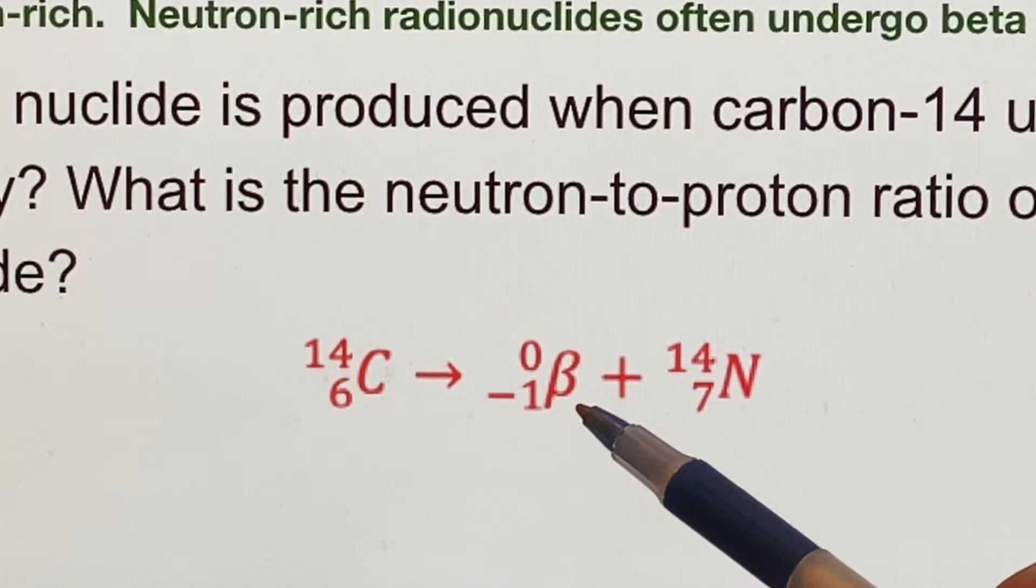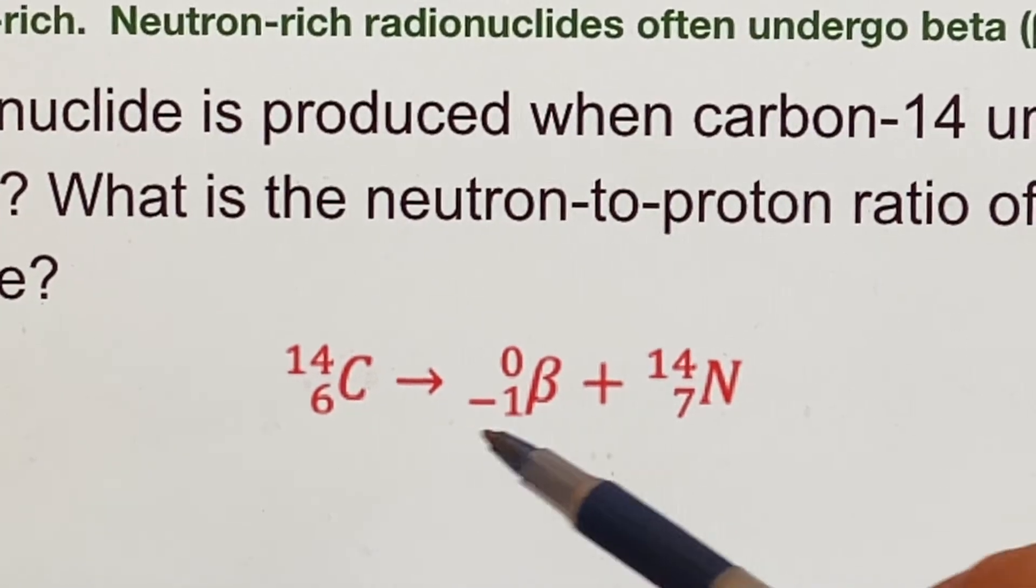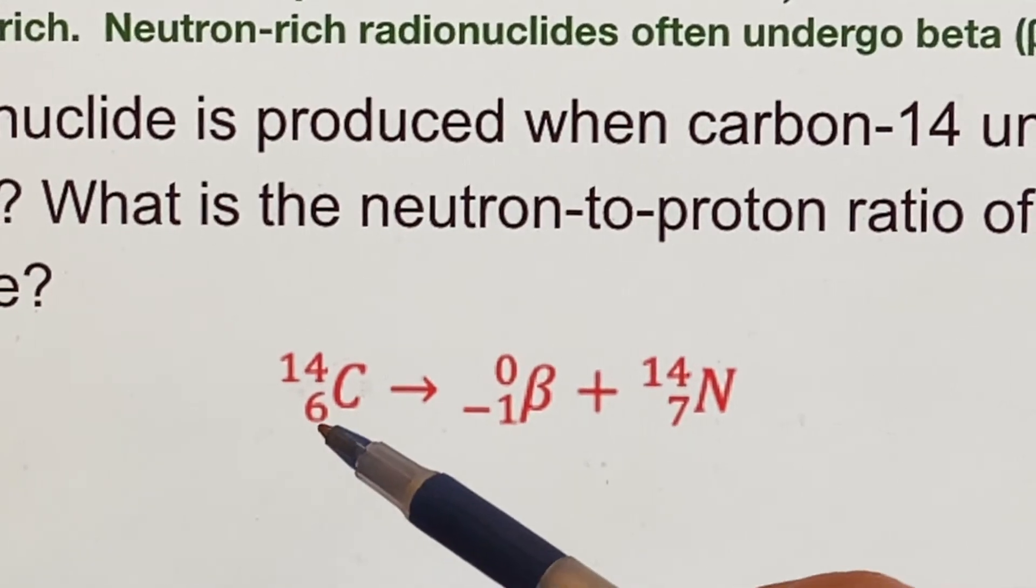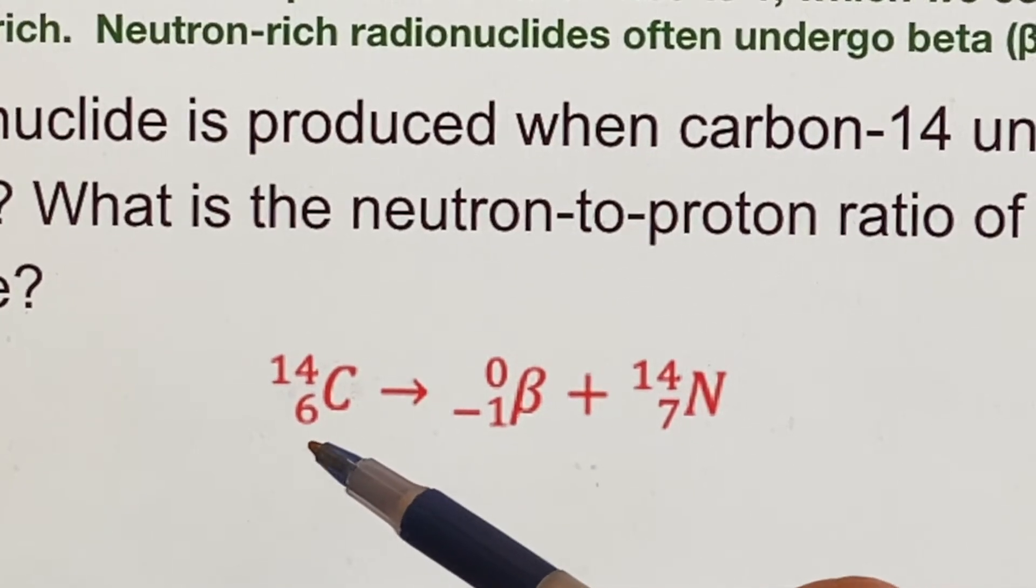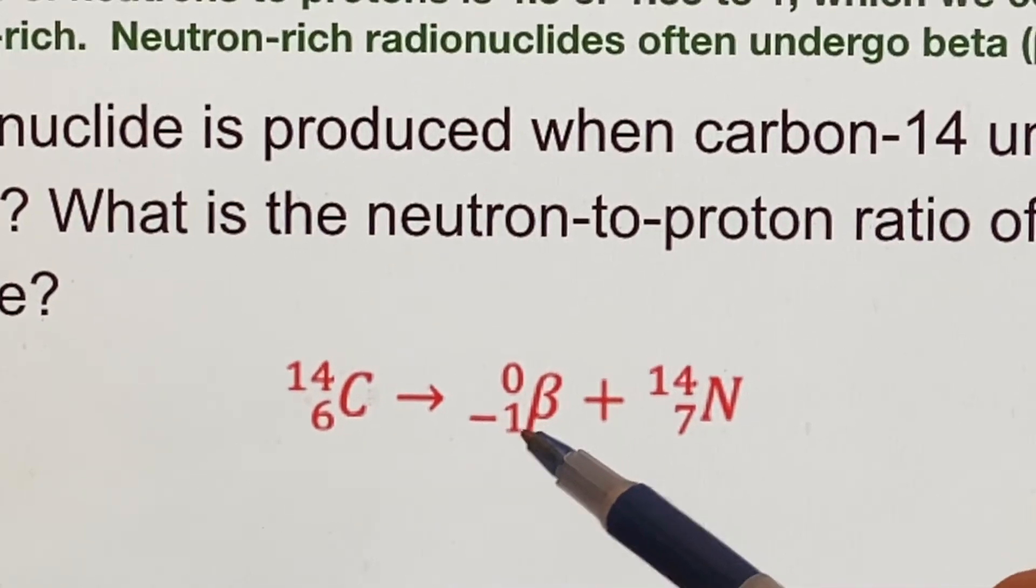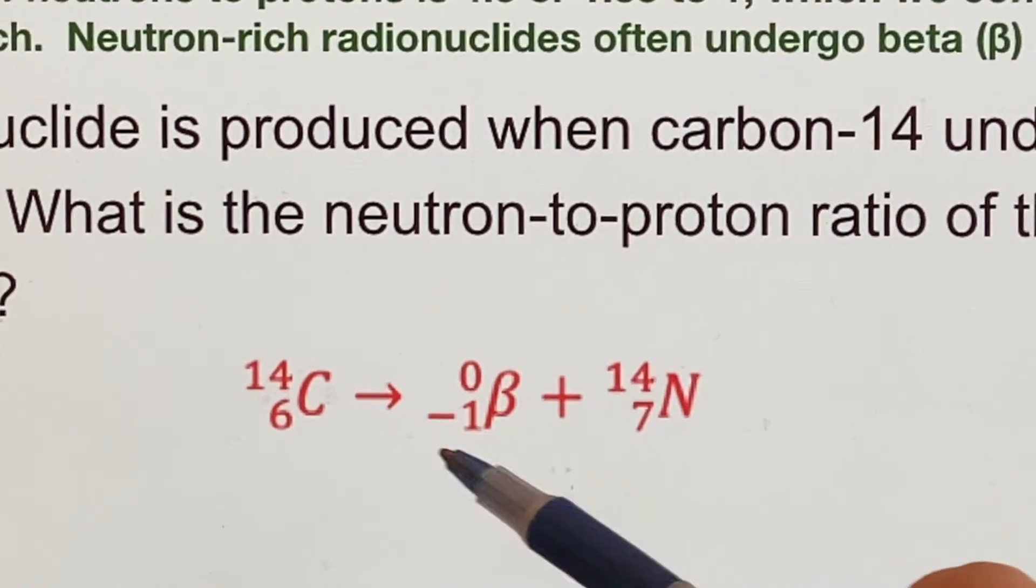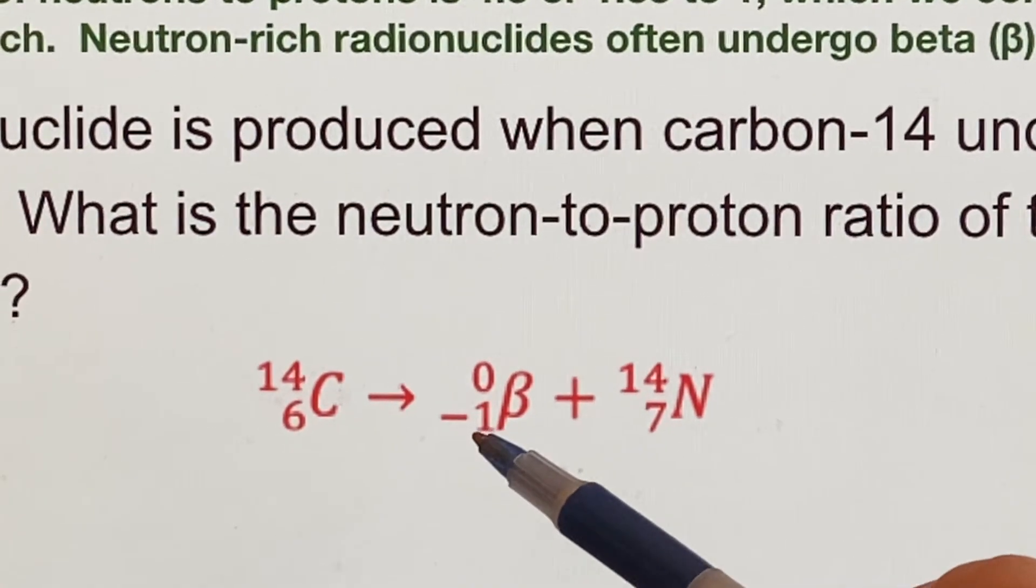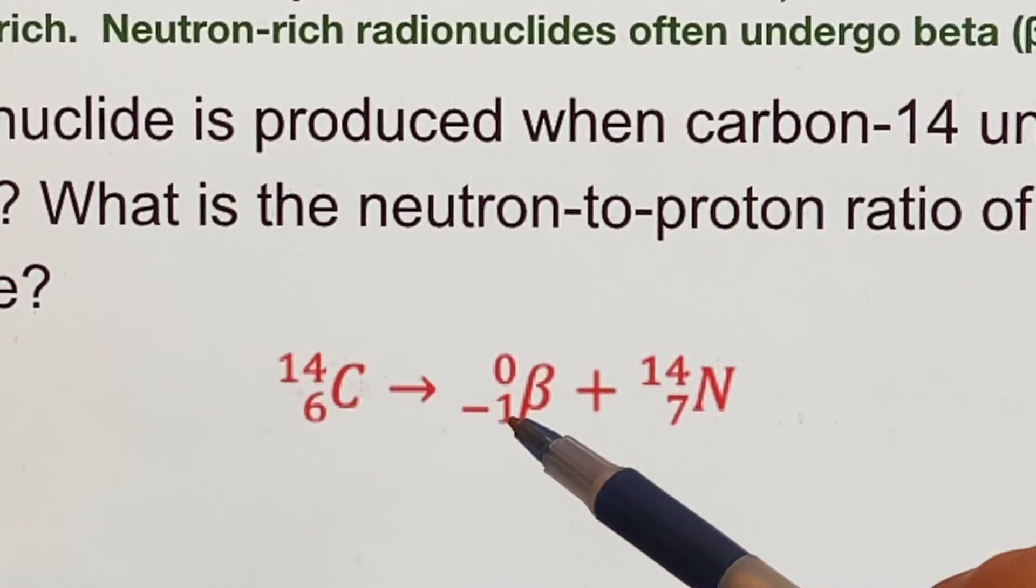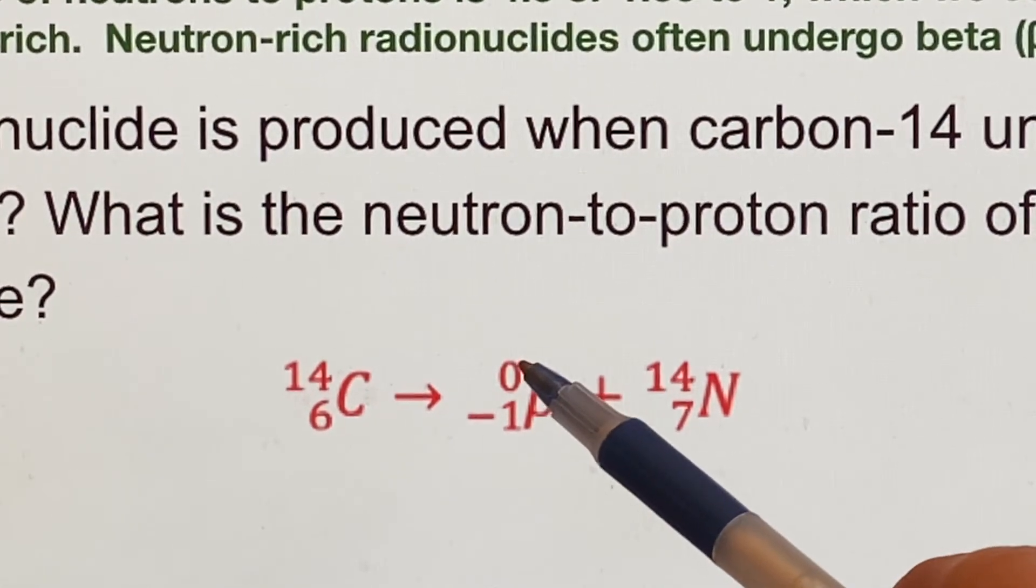A beta particle is really just an electron. If we consider this six to be protons and the fact that they're a positively charged thing, then we could say that an electron was a negatively charged item, right? And that would explain why we would have a negative one down here. And I said electrons were incredibly light, so we basically don't count them as having any mass. So that's why we have a zero up here.